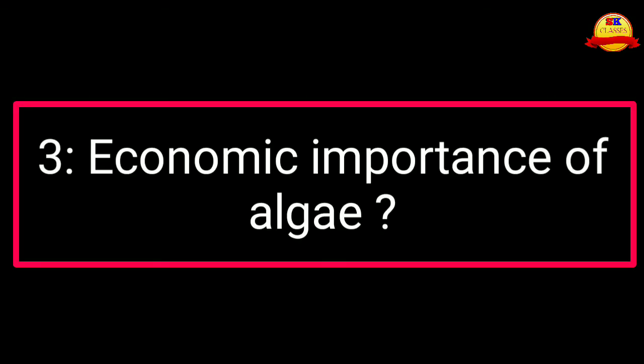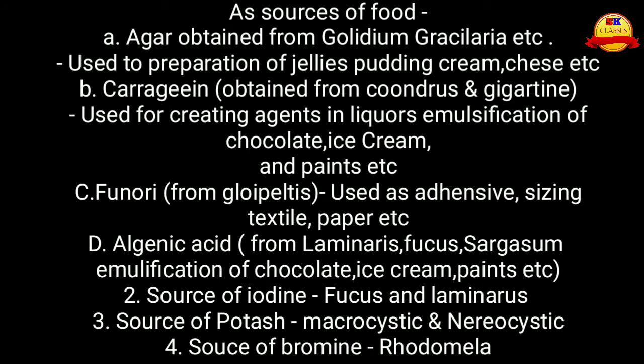The next question is: economic importance of algae as a source of food. Algae are used as a source of food. Agar, obtained from Gelidium, Gracilaria, etc., is used in the preparation of jellies, puddings, cream, and cheese. Carrageenan, obtained from Chondrus and Gigartina, is used in emulsification of chocolate, ice cream, paints, etc. Funori from Gloiopeltis is used as an adhesive and for sizing textiles, paper, etc.